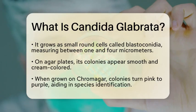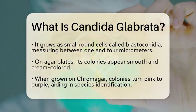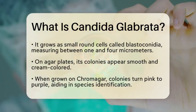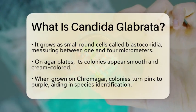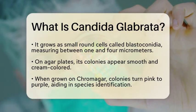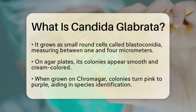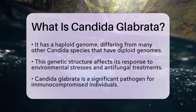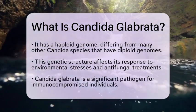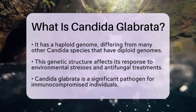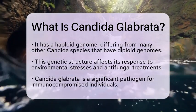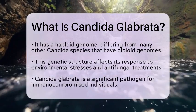Genetically, Candida glabrata has a haploid genome, unlike many other Candida species that have diploid genomes. This genetic difference can influence how it responds to various environmental stresses and antifungal treatments.